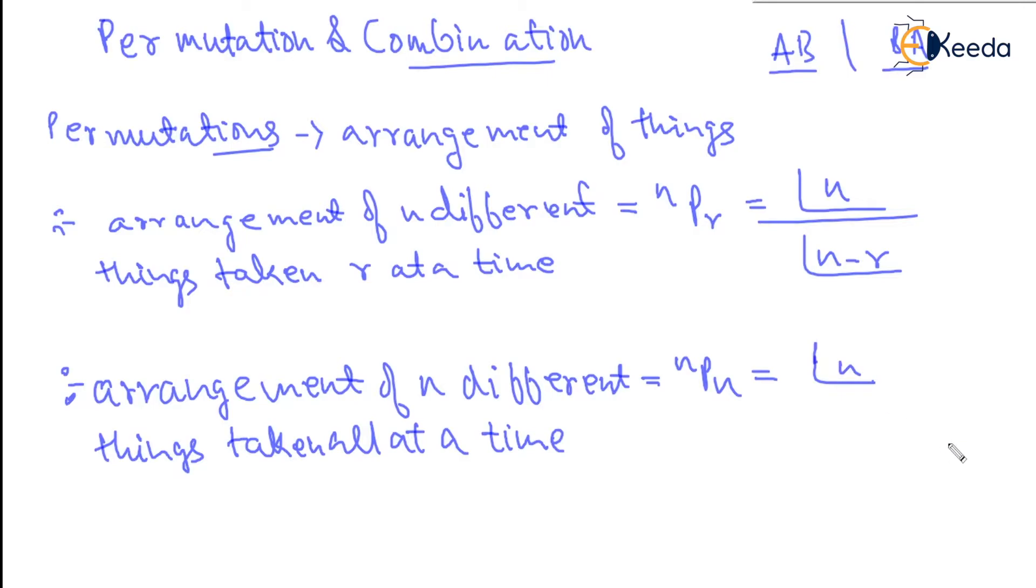We need to know that factorial 0 is equal to 1. So if this n minus n becomes 0, it becomes directly factorial n.